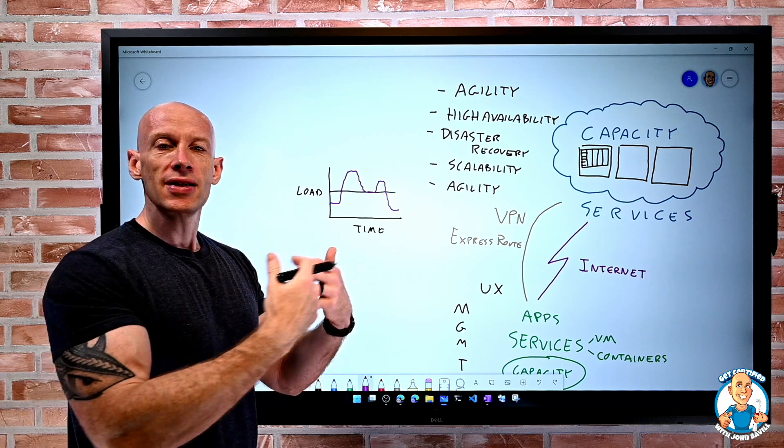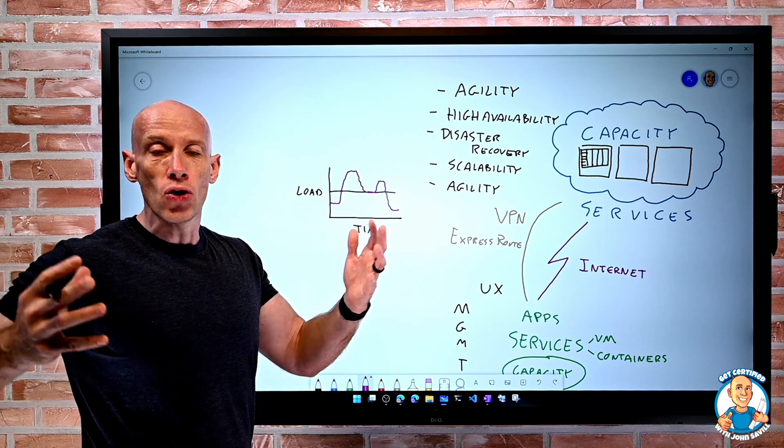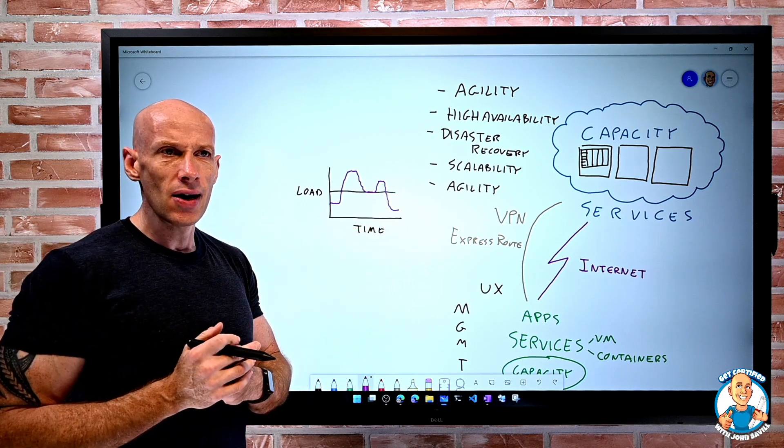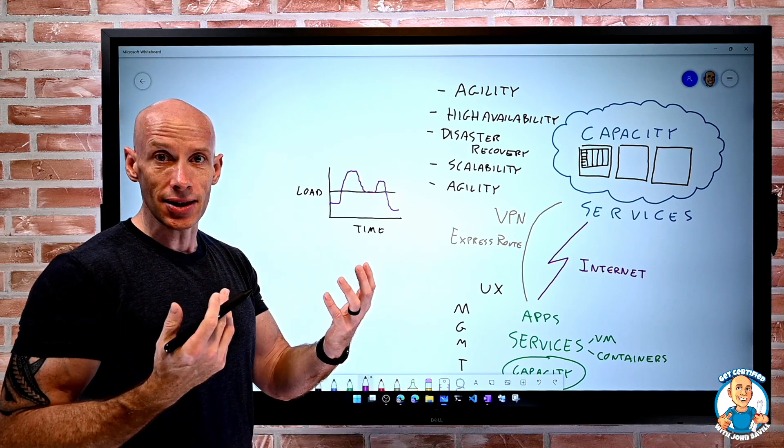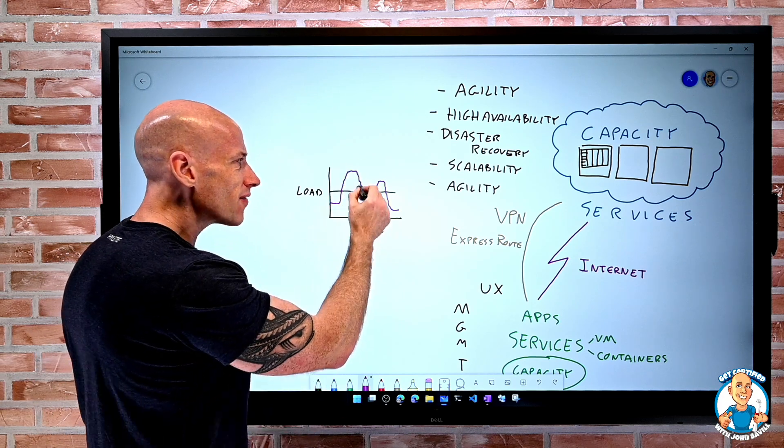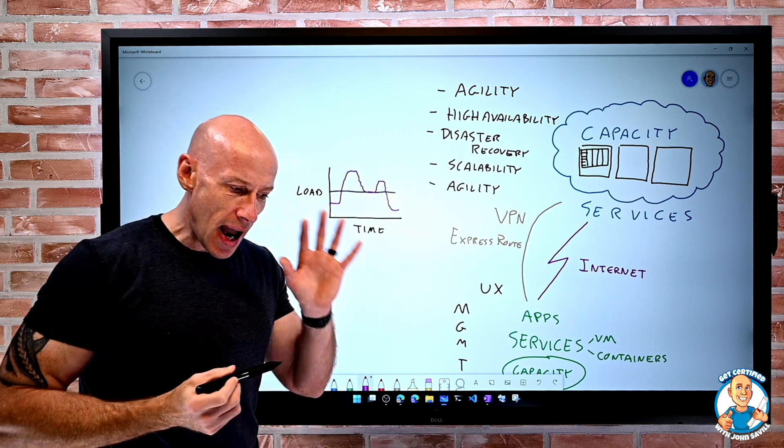Could be monthly. I run some end-of-year batch. Could be annual. Maybe you're a tax software. Maybe it's every four years I host the Olympics or I'm a country's election system. Whenever I have this variance, I want to be agile.